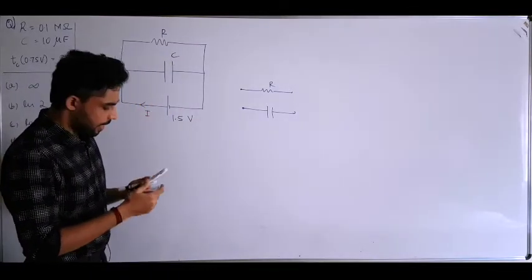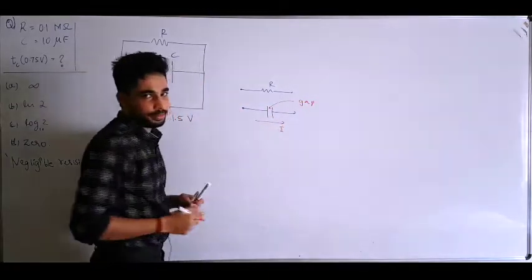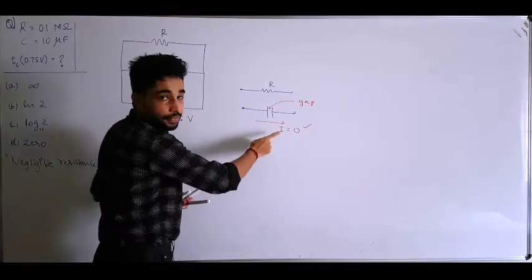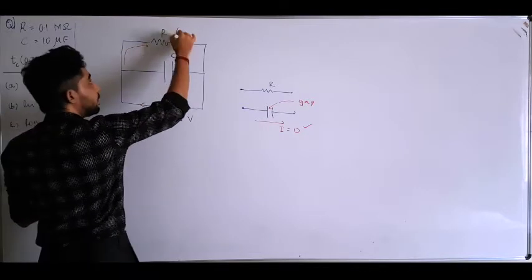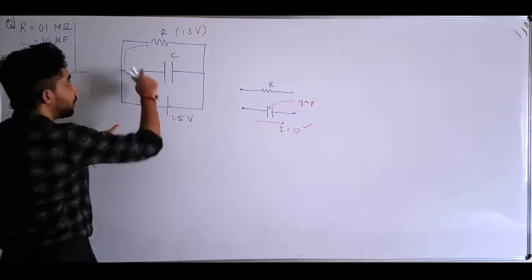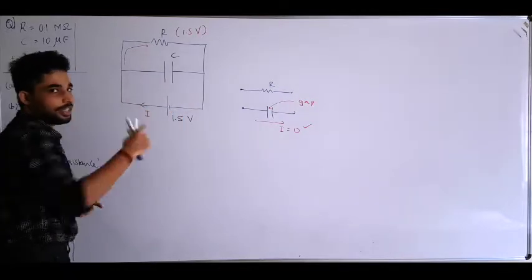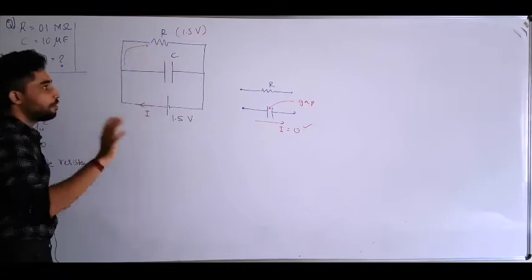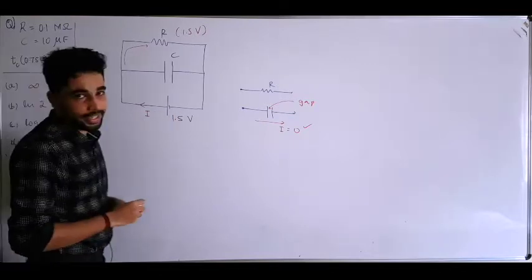Some of you might think that since there is a gap across the capacitor, current cannot actually flow across it — which is true. So current flowing through the capacitor should be zero, meaning the entire current flows through the resistor, giving a drop of 1.5 volt. But the potential across the capacitor would then be zero, and that is wrong. Because it is a parallel connection, the drop across all branches has to be 1.5 volt — that is the idea of a parallel connection.